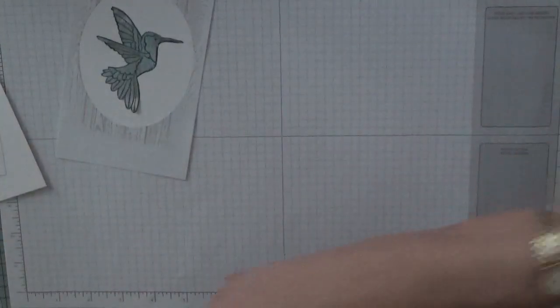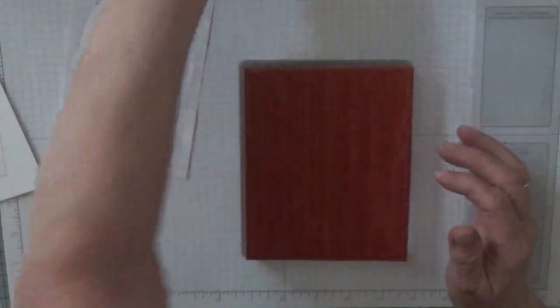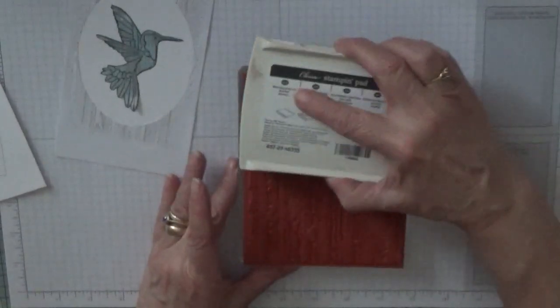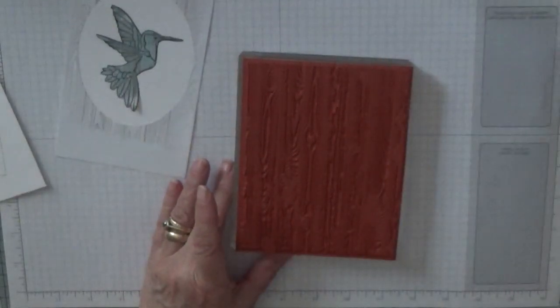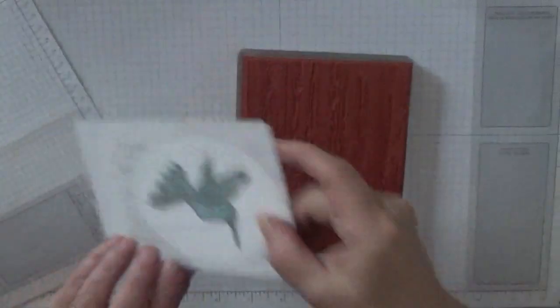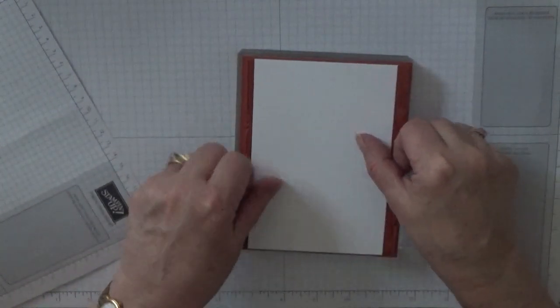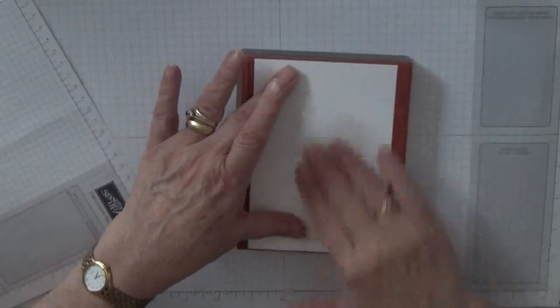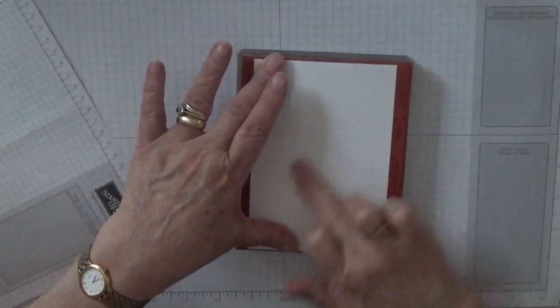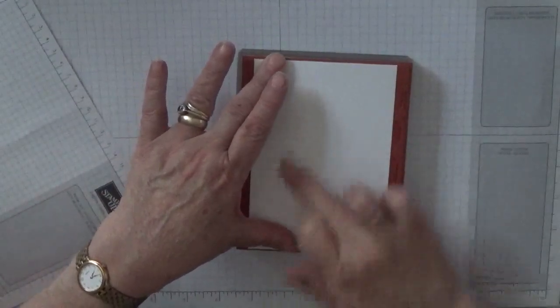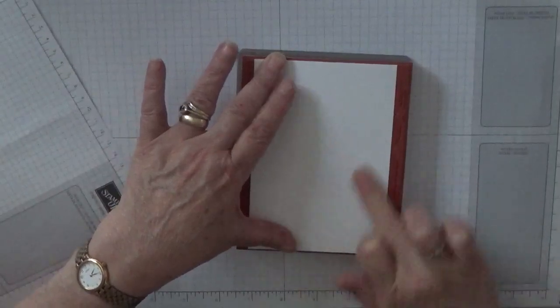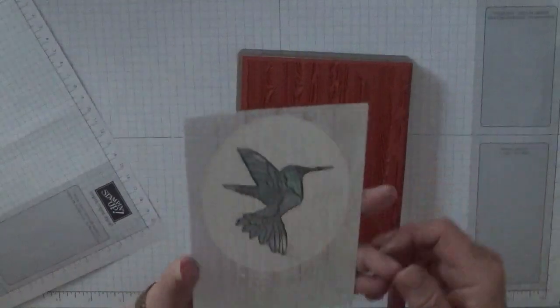And then we need our background stamp which I've already mounted. And I'm using soft suede. Ink that up. I only have to ink the middle up really. Get a scrap of paper. So, just quickly just take off the top coat. And place that on. And then give it a good rub. And make sure you rub it well. Around the edge of your oval. Or your shape. Whatever shape you're putting on.